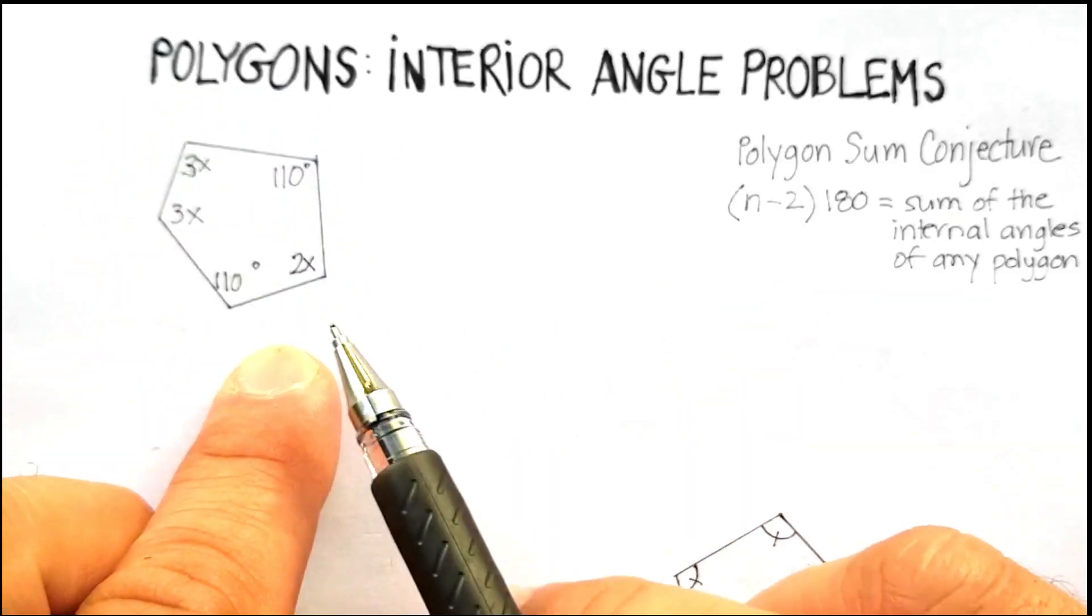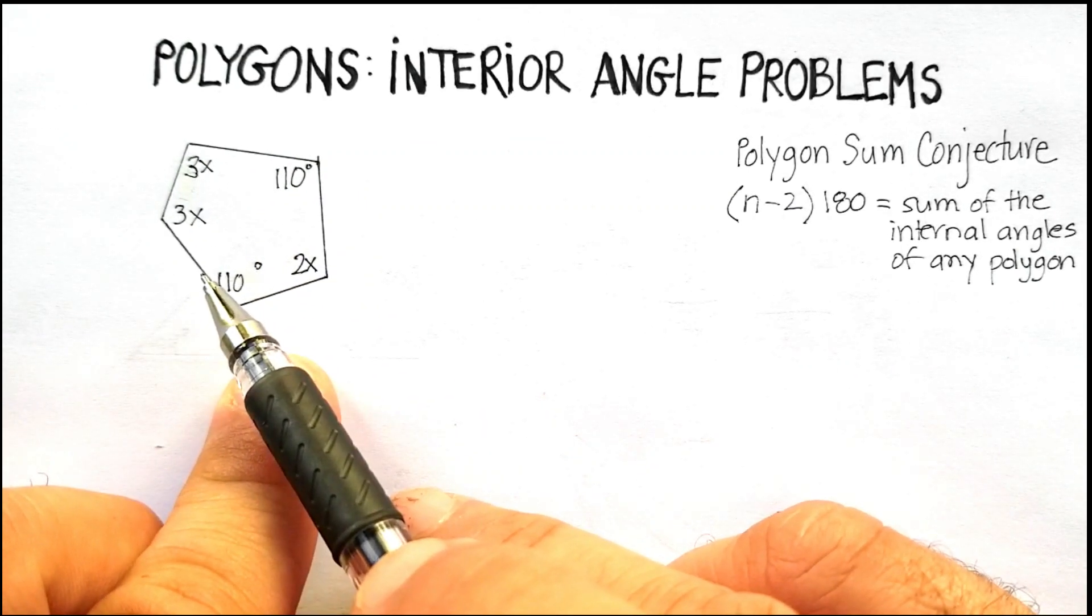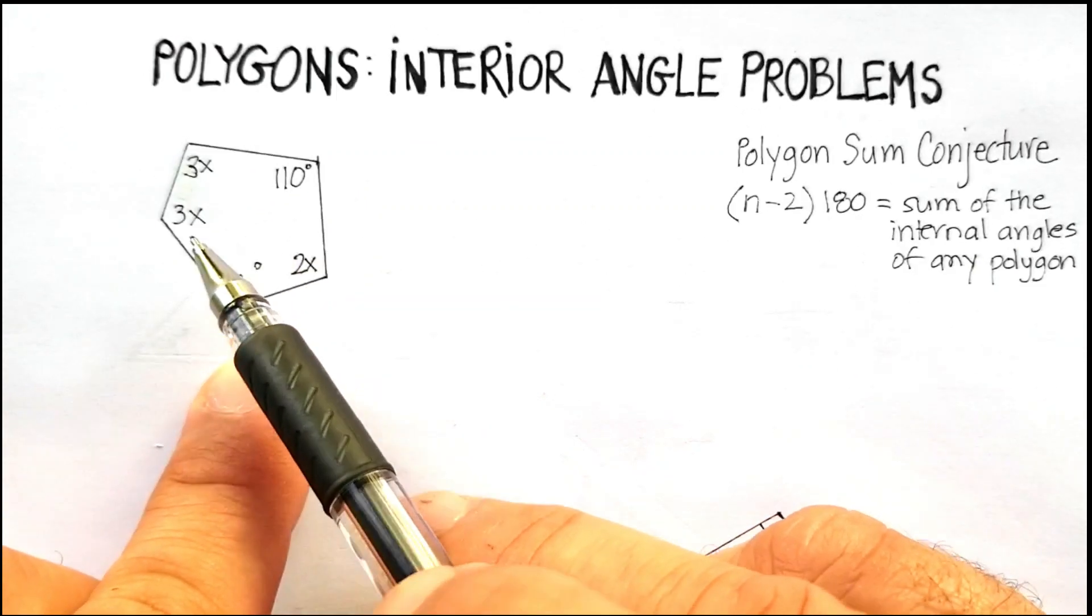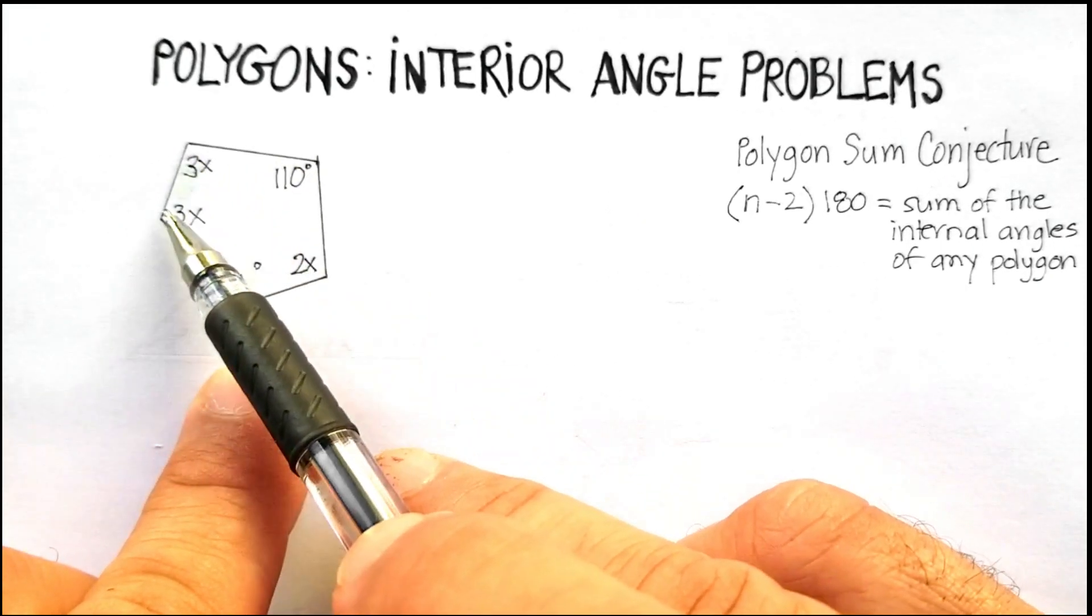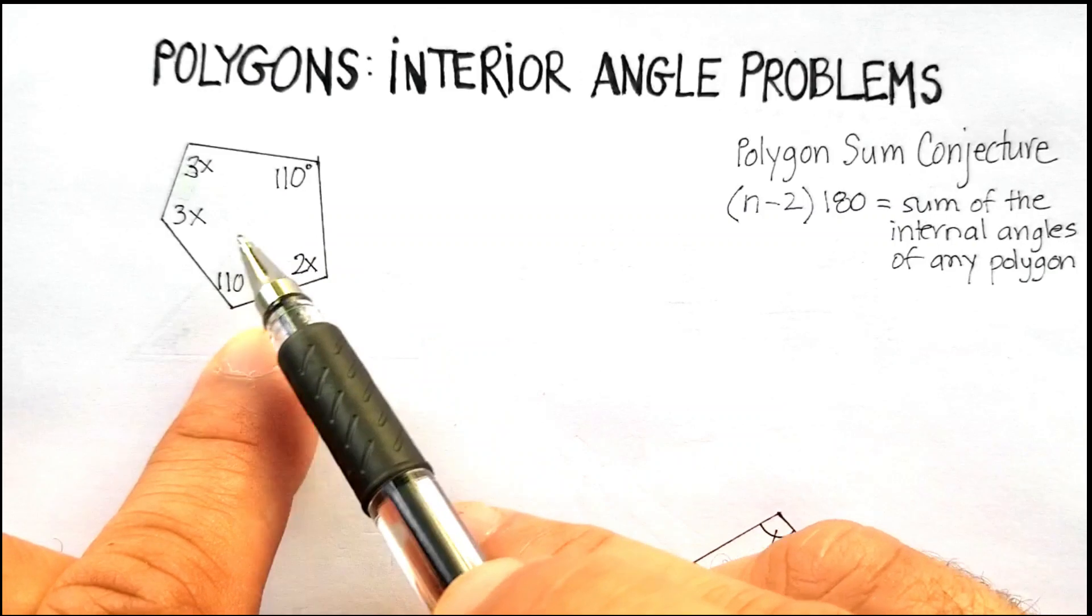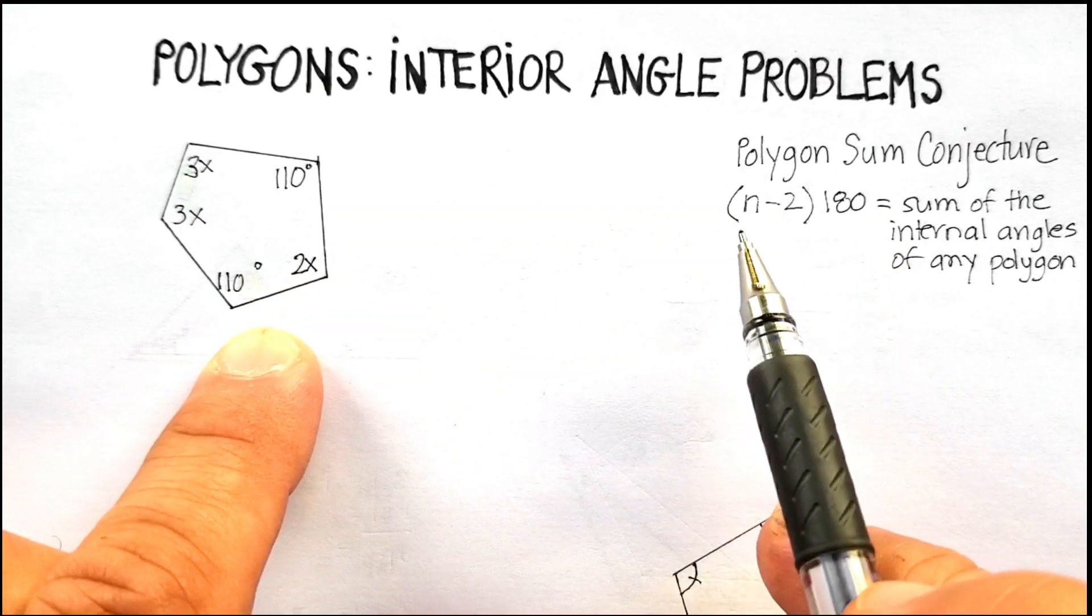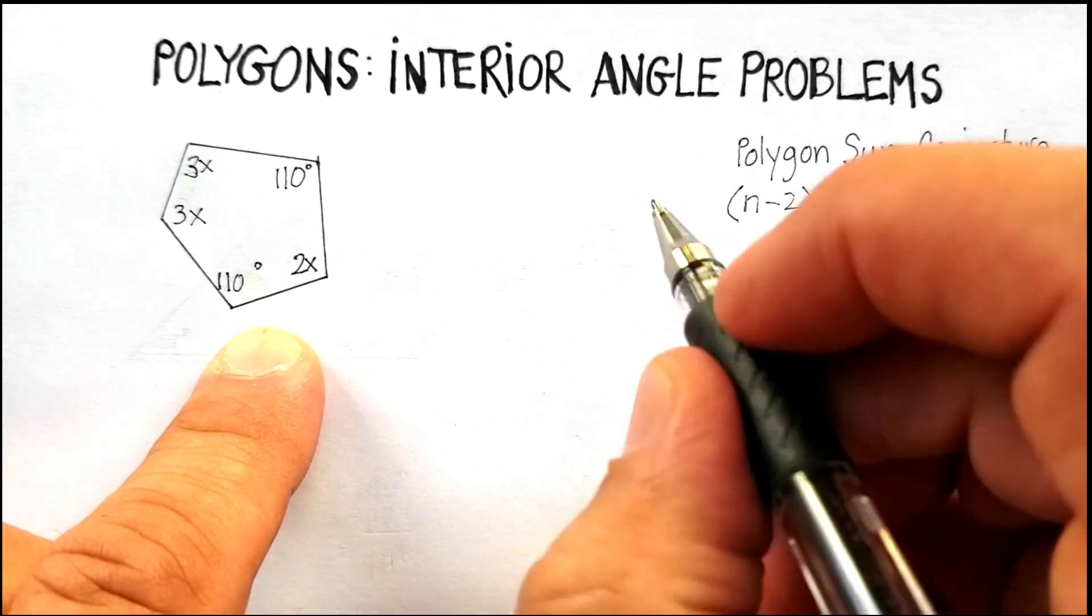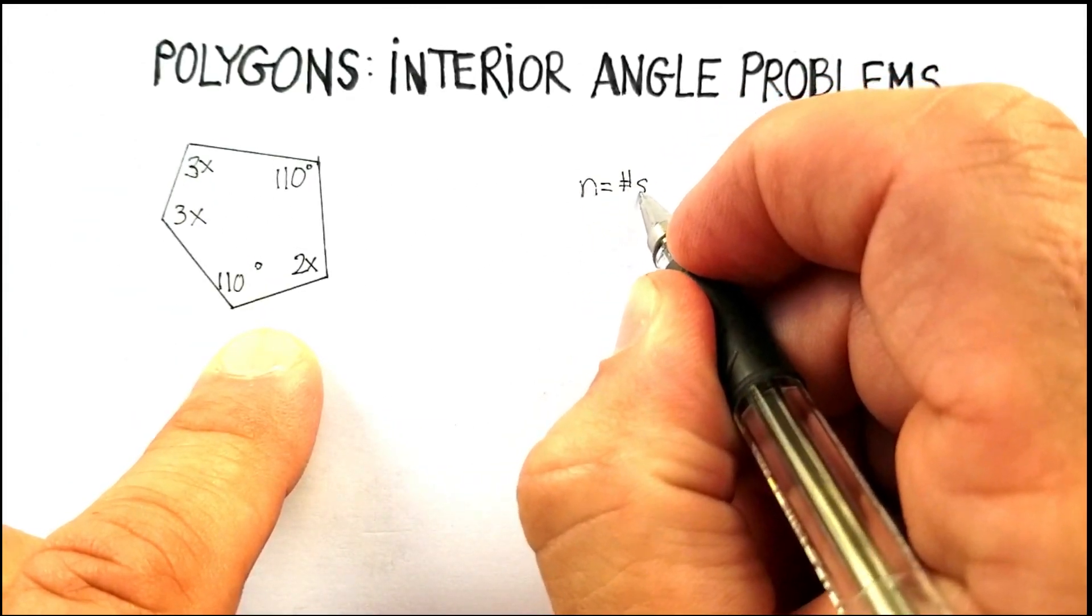So for example, if I have a 1, 2, 3, 4, 5-sided polygon, what would the sum of the internal angles be if I added every single one of the angles inside? This is the formula that would give that. So n equals the number of sides of any polygon.